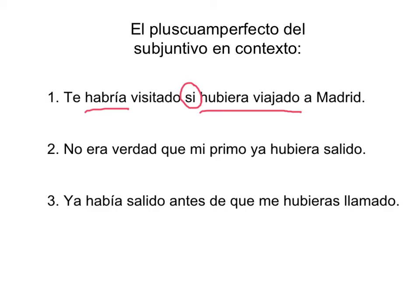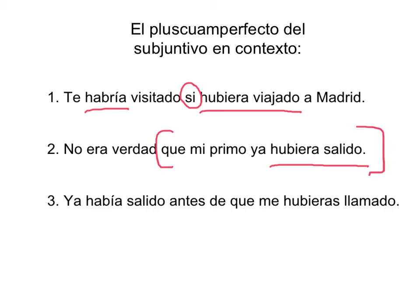Número dos: no era verdad que mi primo ya hubiera salido — it wasn't true that my cousin had already left. Tenemos el pluscuamperfecto del subjuntivo del verbo salir en una cláusula nominal, con la expresión no era verdad, lo que requiere el subjuntivo.